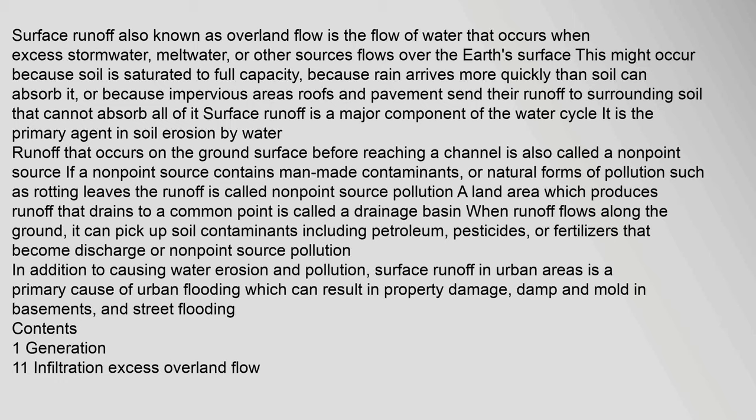When runoff flows along the ground, it can pick up soil contaminants including petroleum, pesticides, or fertilizers that become non-point source pollution. In addition to causing water erosion and pollution, surface runoff in urban areas is a primary cause of urban flooding, which can result in property damage, damp and mold in basements, and street flooding.